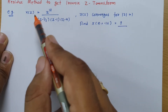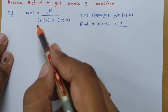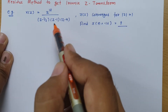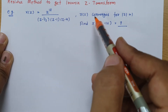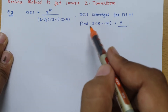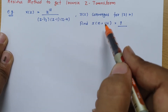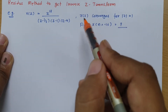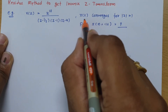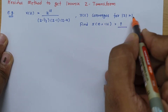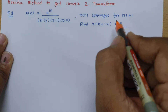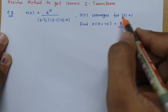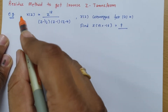Here you can see X of Z equals Z to the power 18, divided by (Z minus half)(Z minus 1)(Z minus 4), and the question is to calculate X of N at n equals minus 16. A very important term is given: X of Z converges for the modulus of Z equals 1. I'll explain the importance of this, but first we need to know the basic formula of the residue method.